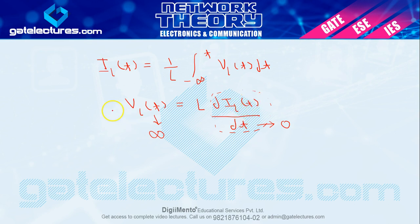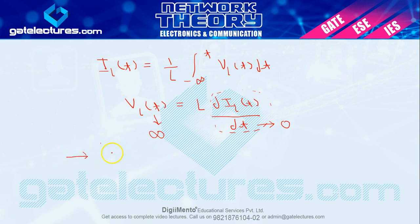In case of resistor, when power is supplied it absorbs and then dissipates it — it cannot store energy. That's why resistor is a static element. Inductor and capacitor, however, absorb power and store it in the form of energy — so they are dynamic elements. Since the inductor stores energy, we can calculate the stored energy value.